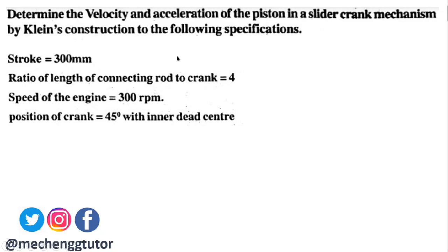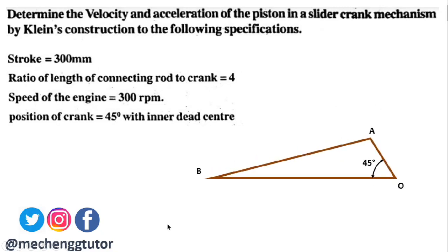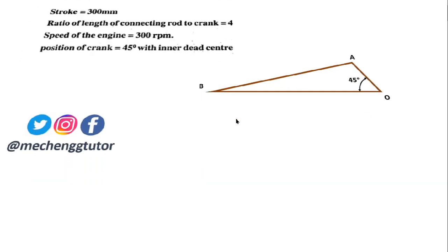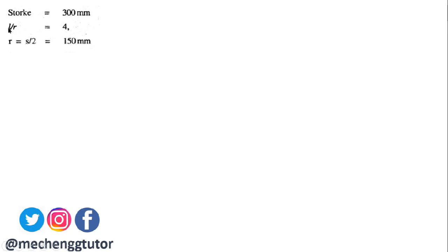Only the stroke length is given; no direct length of the crank or connecting rod is given, but their ratio is 4. With OA as the crank and AB as the connecting rod, AB to OA equals 4. Since the stroke is 300 mm, the crank length r equals stroke divided by 2, which is 150 mm. The connecting rod length is 4 times the crank, giving 600 mm.